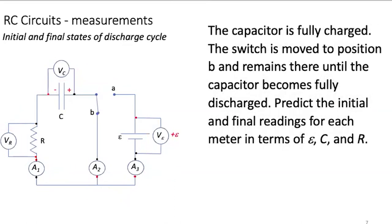Let's do the same thing for the discharge cycle. Let's assume the capacitor is fully charged. The switch is now moved to position B and remains there until the capacitor becomes fully discharged. Predict the initial and final readings for each meter in terms of epsilon, C, and R. Pause the video while you write down your predictions.